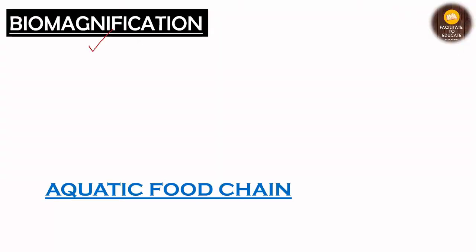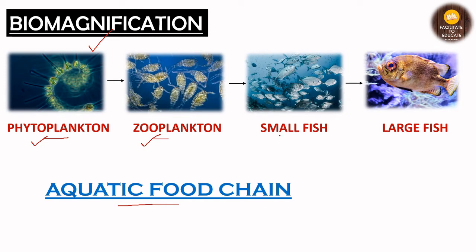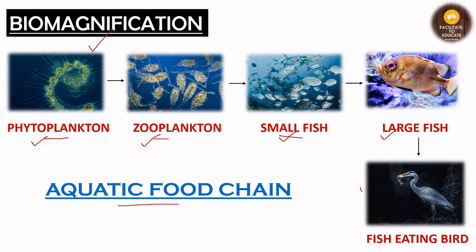We'll start with biomagnification, and then move on to bioaccumulation. To understand biomagnification, we'll take an example of the aquatic food chain. It starts with the primary producer — the phytoplankton — which is eaten by zooplanktons, very tiny animals. The zooplankton is eaten by small fish, the small fish is eaten by large fish, and ultimately the large fish is eaten by the fish-eating bird — the topmost carnivore.